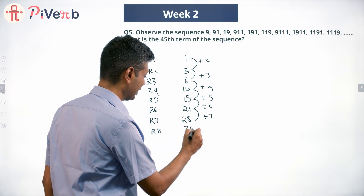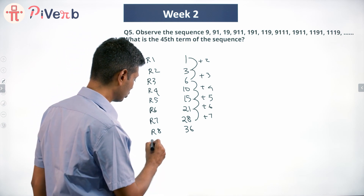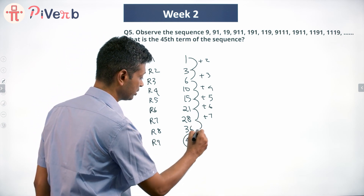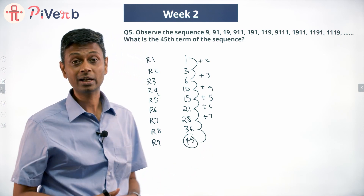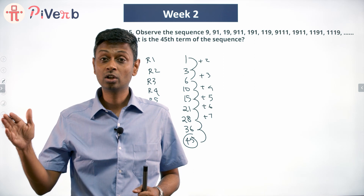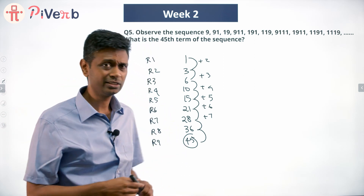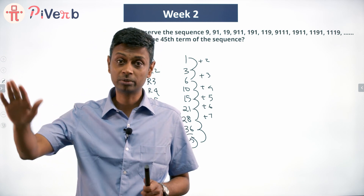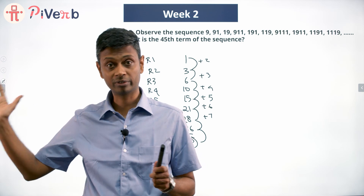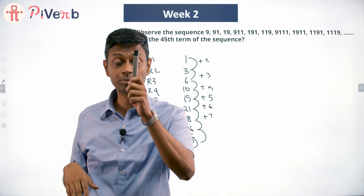I keep going, and end of row nine: 36 + 8 + 9... wait — we get 45 straight away! Row nine ends with the 45th number. Row nine consists of nine-digit numbers, all having only one 9 and the rest ones.